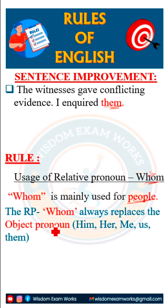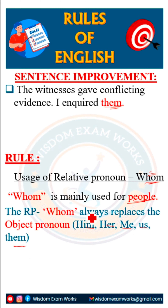So the relative pronoun always replaces the object pronoun. The object pronoun is him, her, me, us, them. So we already have a rule for 'whom' to replace the subject pronoun.